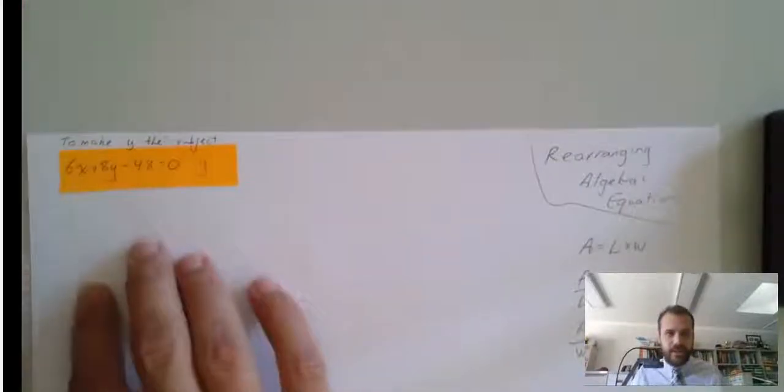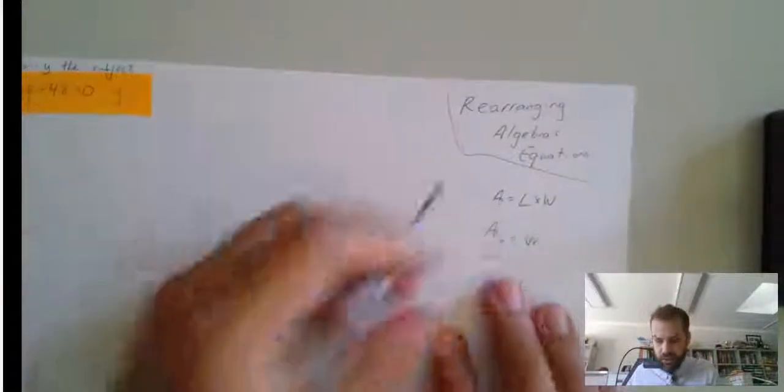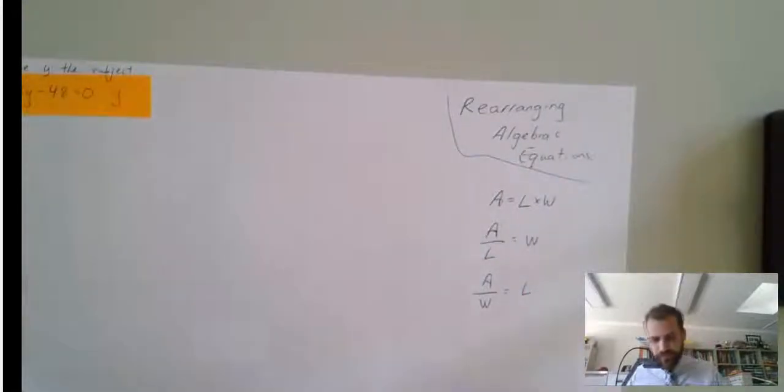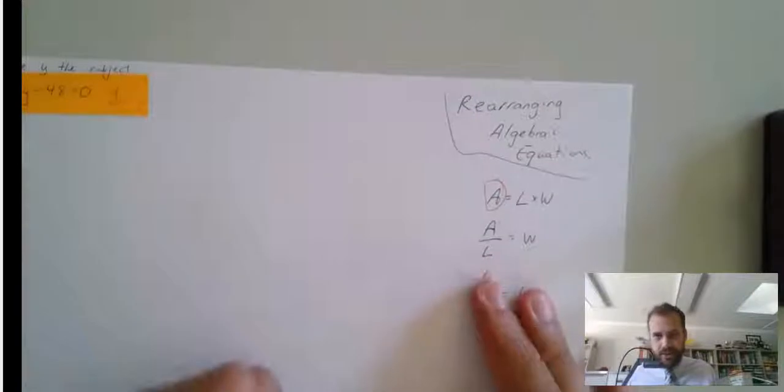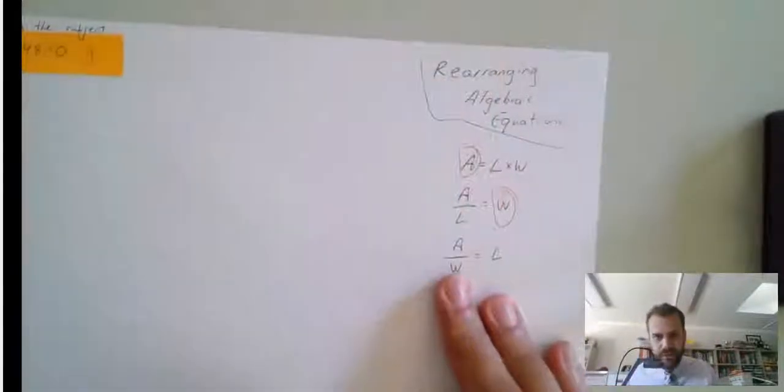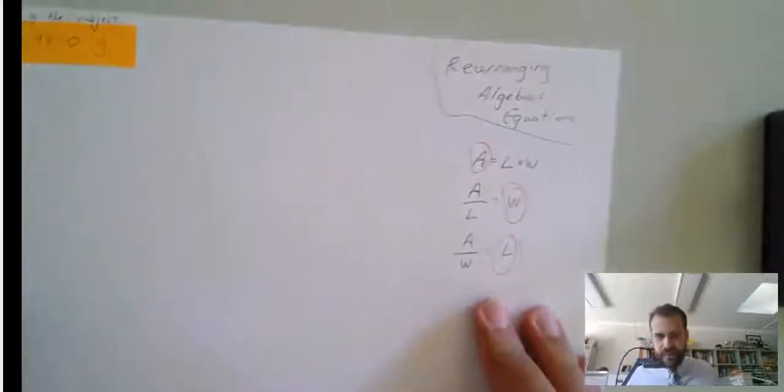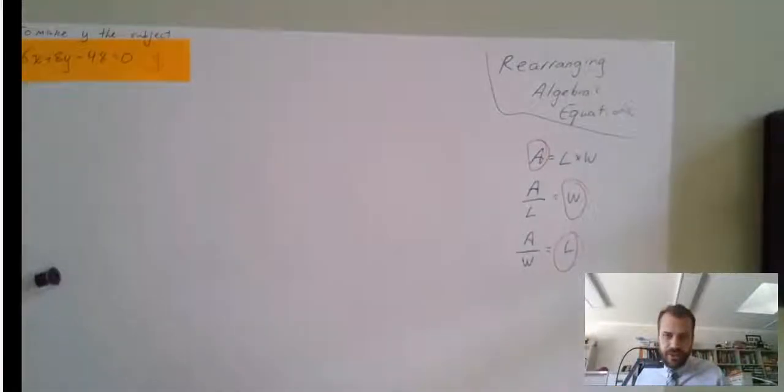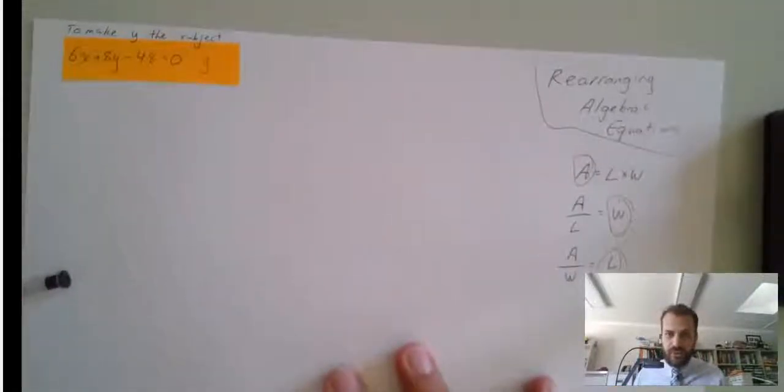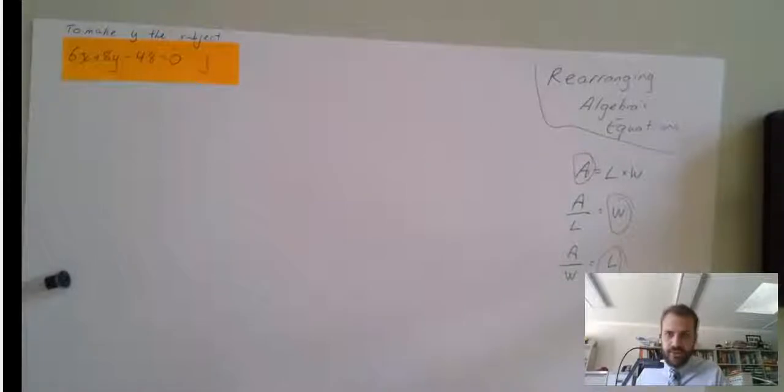Now, when I say to make y the subject, in these cases, a is the subject, w is the subject, and l is the subject. The subject is the letter that's all by itself on one side, and everything else is on the other side.